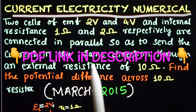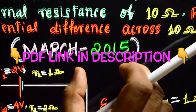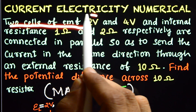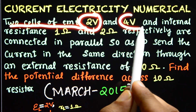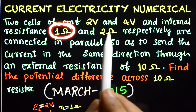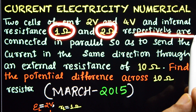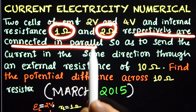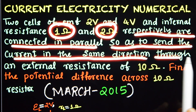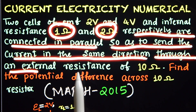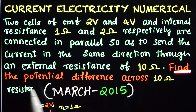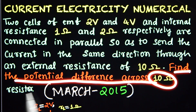Current Electricity Numerical, March 2015. Two cells of EMF 2 volt and 4 volt and internal resistance 1 ohm and 2 ohm respectively are connected in parallel so as to send the current in the same direction through an external resistance of 10 ohm. Find the potential difference across the 10 ohm resistor.